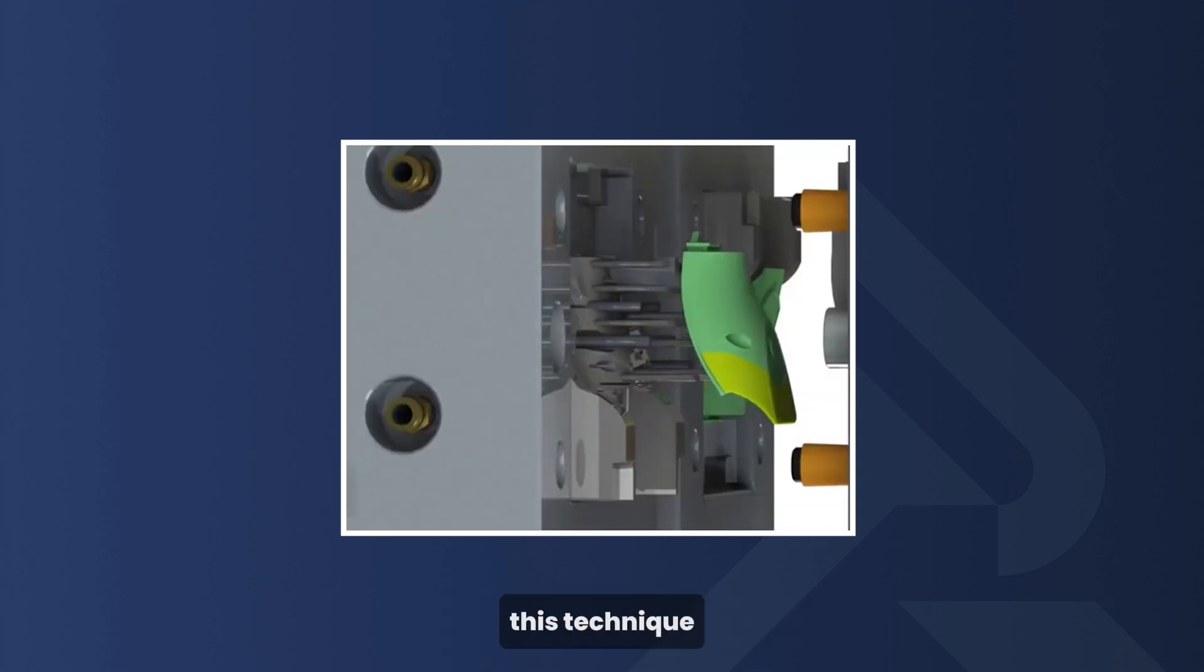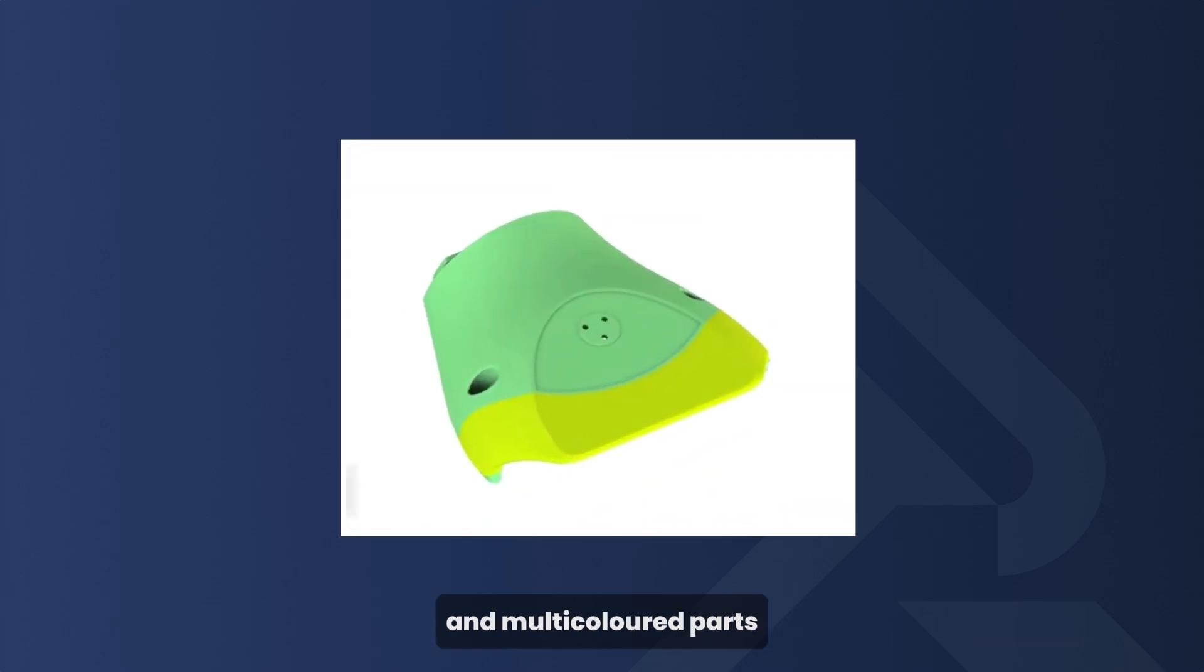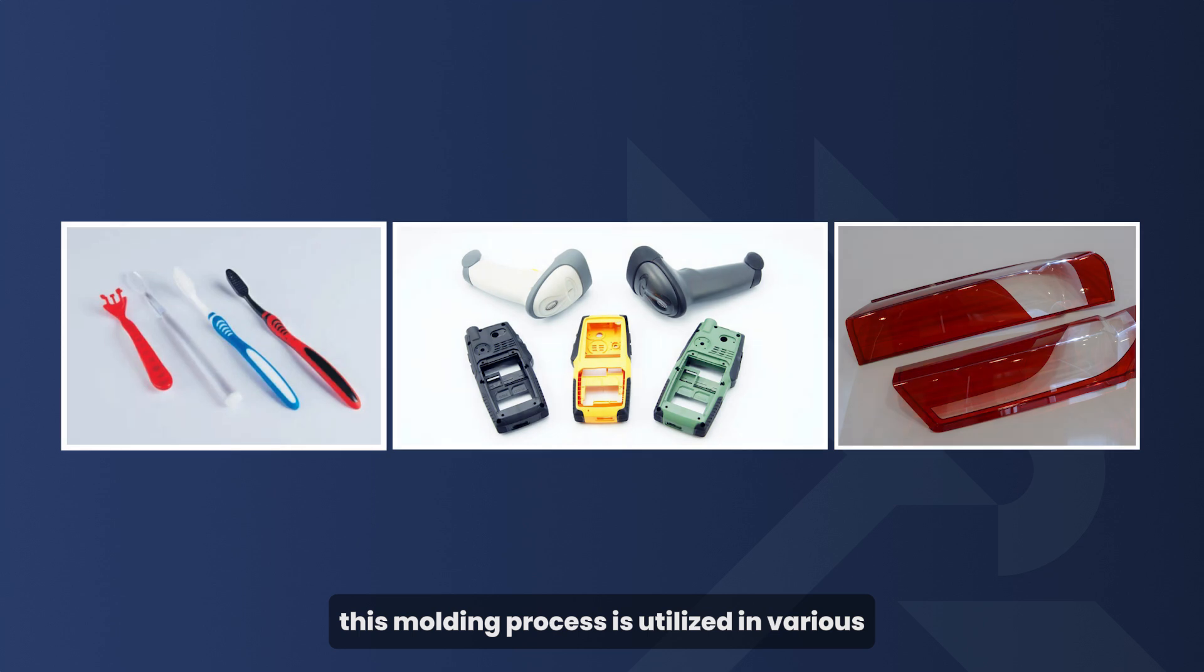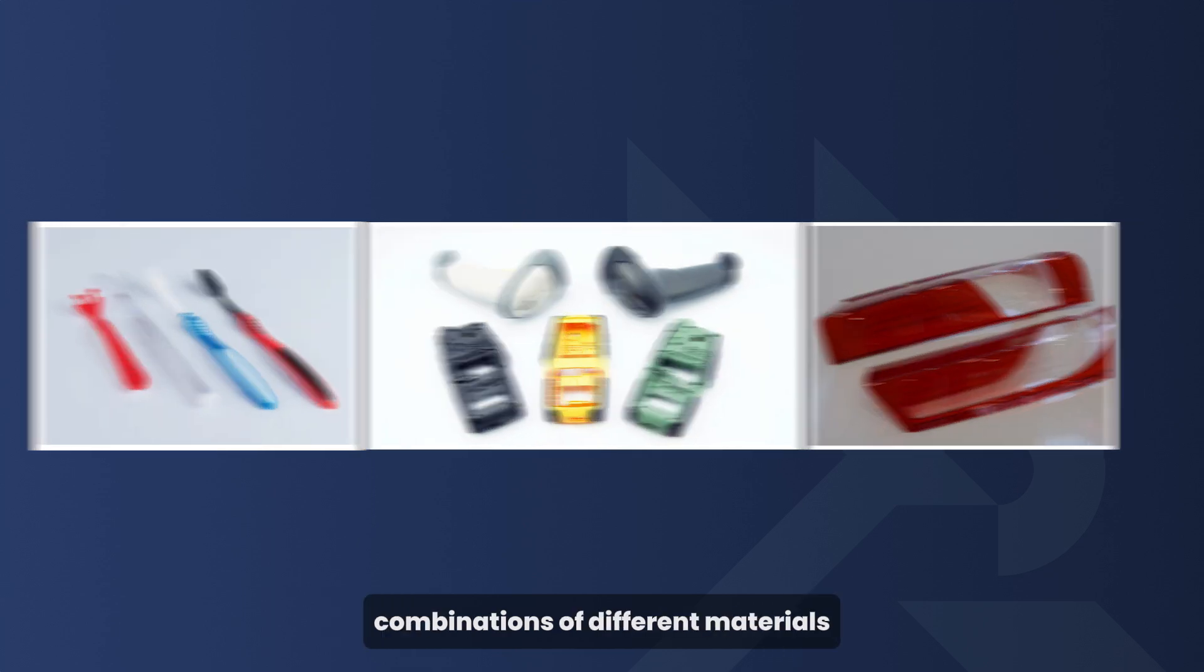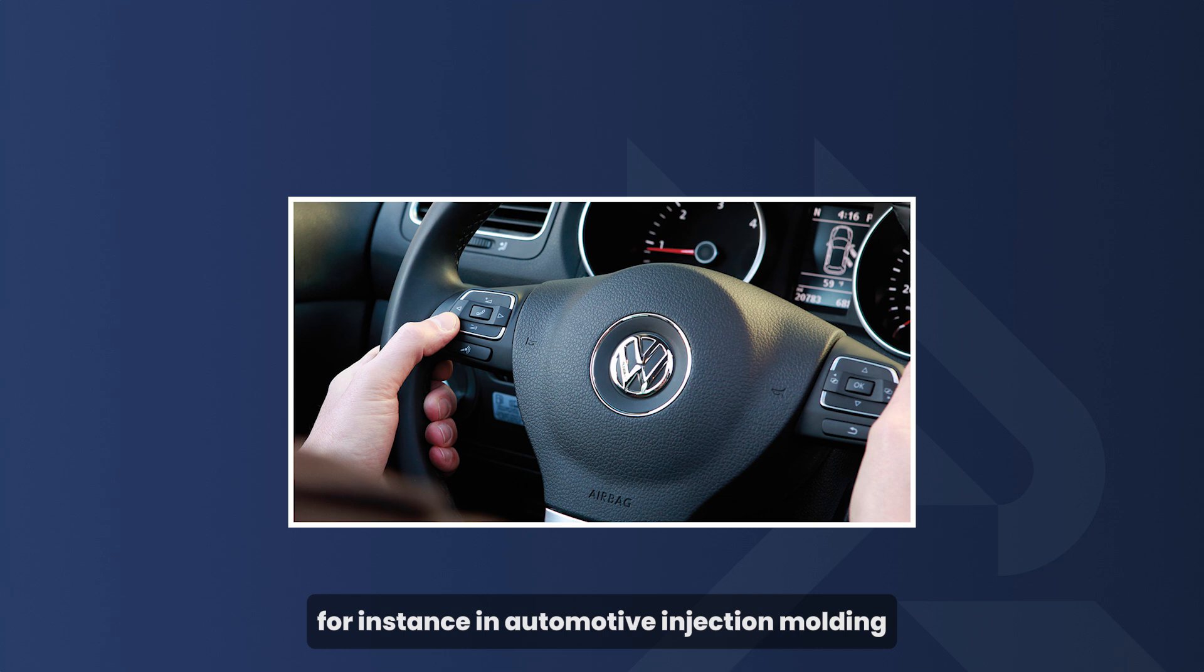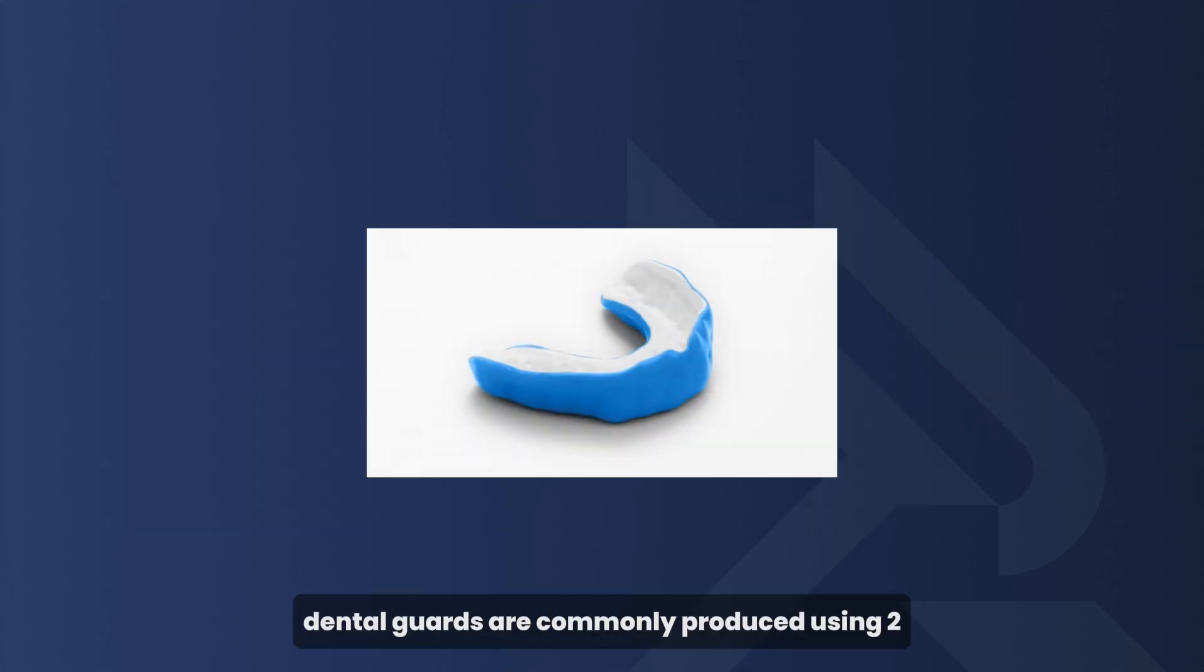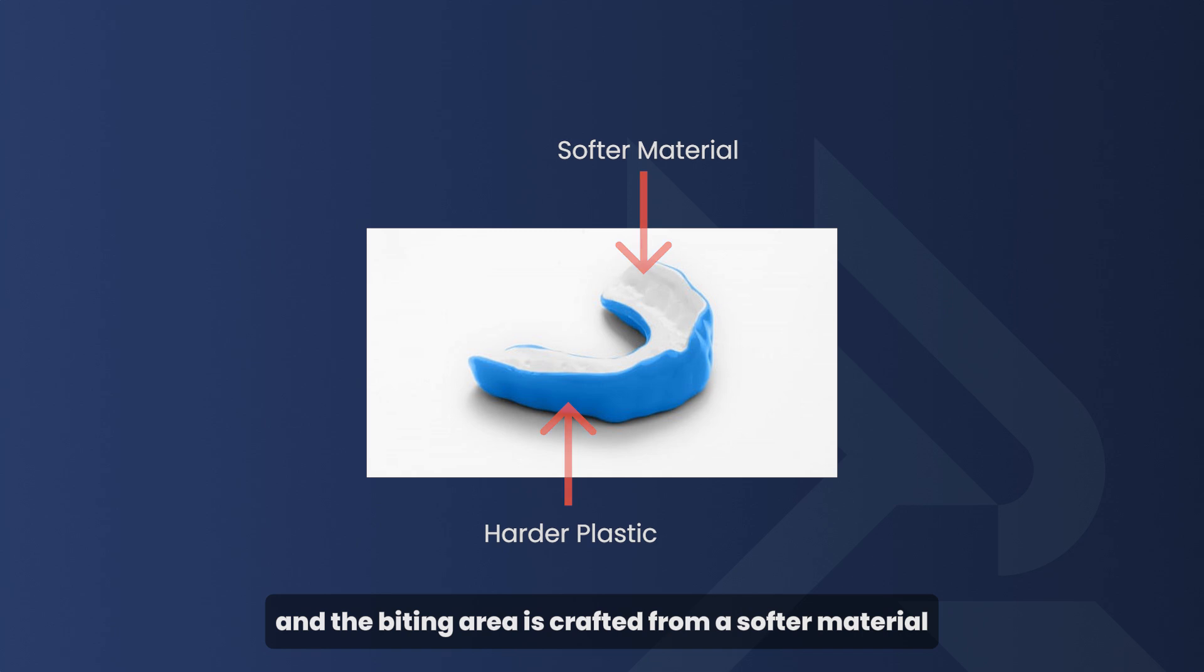This technique allows engineers to create multi-material and multi-colored parts without additional machining steps. This molding process is utilized in various applications that require combinations of different materials. For instance, in automotive injection molding, molded-in buttons on a steering wheel often feature a softer texture compared to the rest of the wheel. In medical injection molding, dental guards are commonly produced using two-shot molding, where the frame is made from a harder plastic and the biting area is crafted from a softer material.